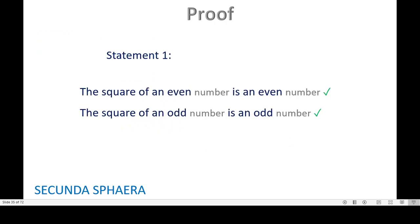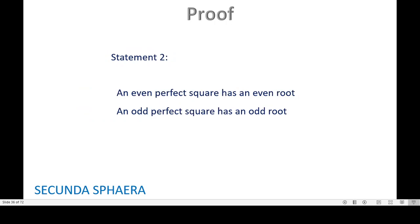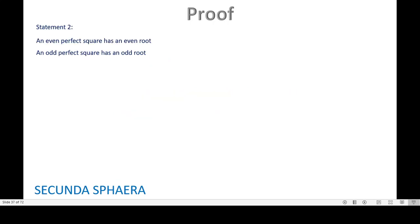So we are feeling confident — this has been quick. That wraps up the first part of the video. Now we go for the second statement: an even perfect square has an even root, and an odd perfect square has an odd root.